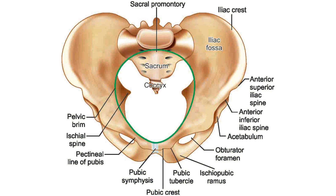Pelvic brim. The pelvic brim, shown as the green line, is an imaginary boundary which divides the pelvis into the false pelvis and the true pelvis. The false pelvis lies above the pelvic brim and has no obstetrical significance. The true pelvis lies below the pelvic brim, plays an important role in childbirth and delivery, and forms a bony canal through which the fetus passes at the time of labor. It is formed by the symphysis pubis anteriorly and the sacrum and coccyx posteriorly.